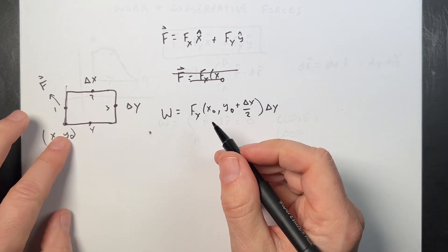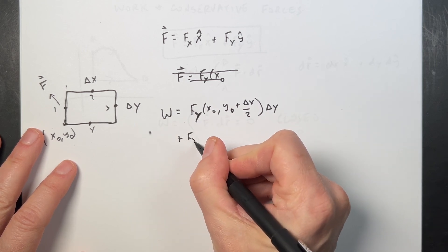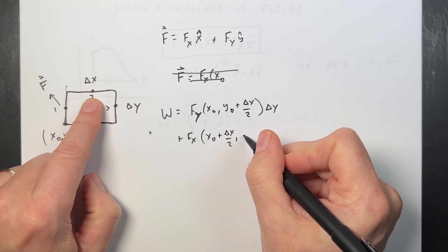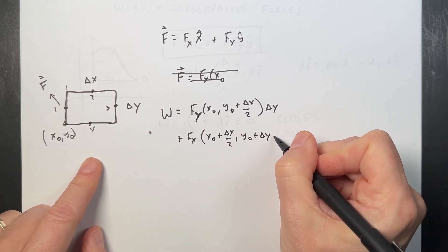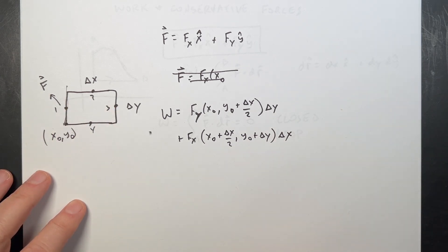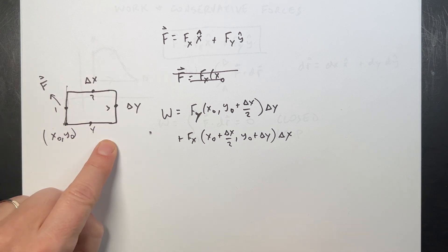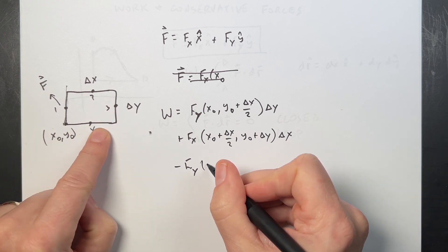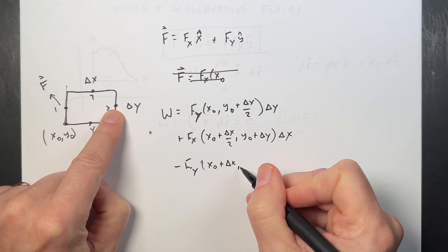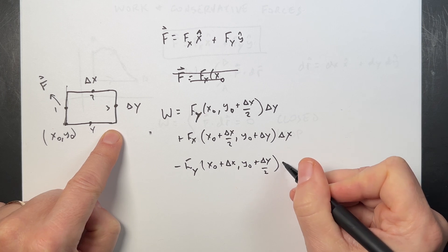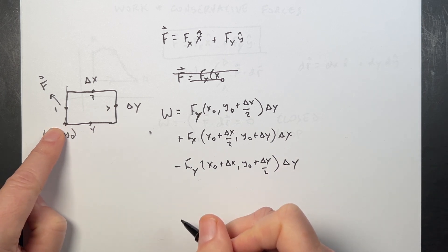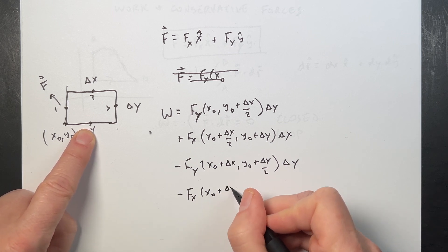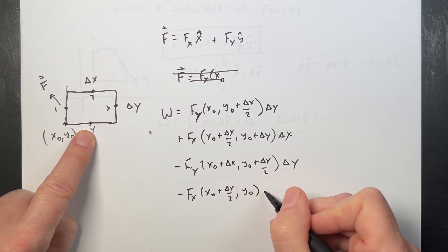On leg 3, I'm going in the negative y direction, so I get negative fy evaluated at (x₀ + Δx, y₀ + Δy/2) times Δy. And finally on leg 4, I'm going in the negative x direction, so I get minus fx evaluated at (x₀ + Δx/2, y₀) times Δx.